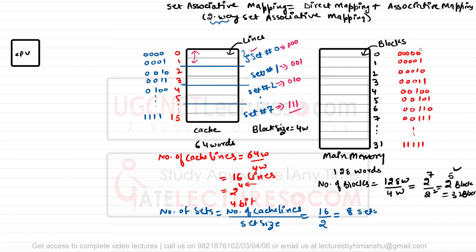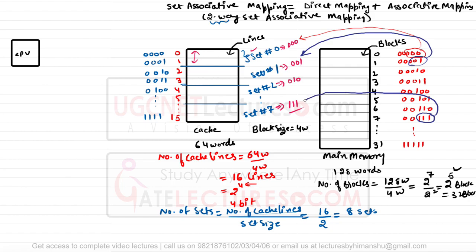Which block can be placed in which set depends on the last 3 bits of the block address. If the last three bits are 000, the block is placed in set 0. If the last three bits are 001, it goes in set 1. If the last three bits are 111, the block goes in set 7. After set 7, the next block address has last three bits 000, so it again goes into set 0. Within the set, the block can be placed in any line.